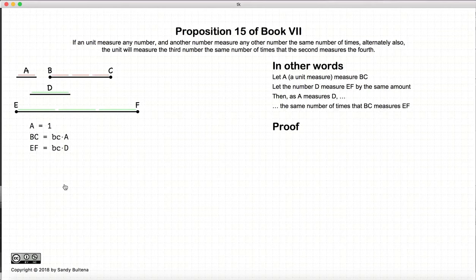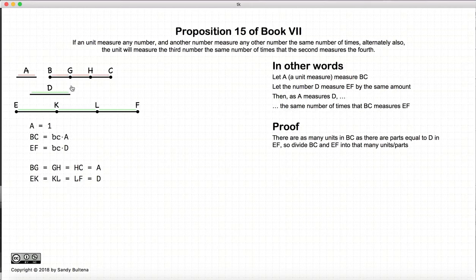So let's look at the proof of this. So again, we're starting off that as many times that A measures BC, D measures EF. So what we're going to do is we're going to divide BC into equal units, the same number of units that A measures BC. And likewise, we're going to divide EF into the same number of units that D measures EF. So in other words, BG equals GH equals HC is equal to A or 1, and EK equals KL equals LF, which is equal to D.